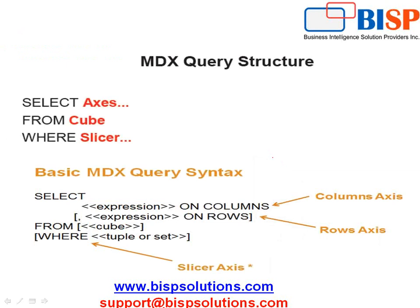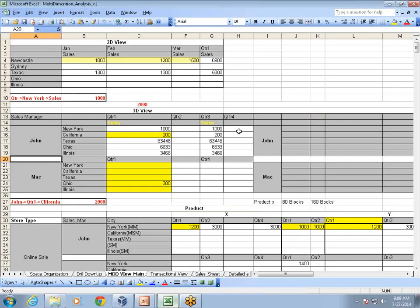Every time you write an MDX query, you need to picture in your mind what it will look like. The typical structure is: SELECT — name of your axis or column — on ROWS or COLUMNS, FROM cube name, and a slicer which is optional. In the SELECT clause you can write expressions for columns, rows, or a combination of both. The WHERE clause specifies your slicer.